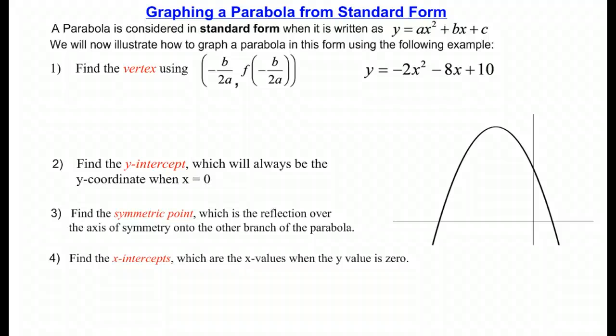We've graphed parabolas from vertex form before, but now we're going to learn how to graph them from standard form. Standard form means we have a parabola that's given to us in that form right there. Notice the a is the coefficient of x squared, b is the coefficient of x, and c is the constant term.